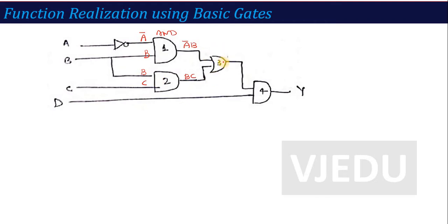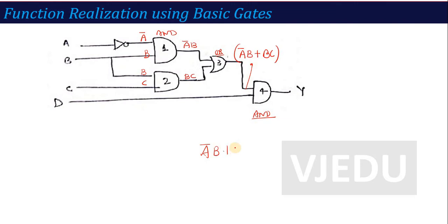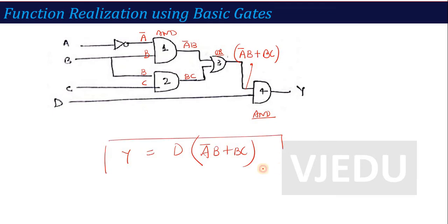Gate 3 is an OR gate, so its output is A̅B + BC. This output is given to Gate 4, which is an AND gate. The first input of Gate 4 is A̅B + BC, and it is multiplied with D. So the final output is y = (A̅B + BC)·D.